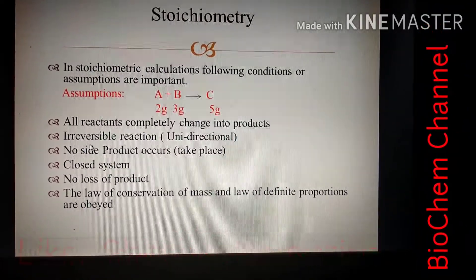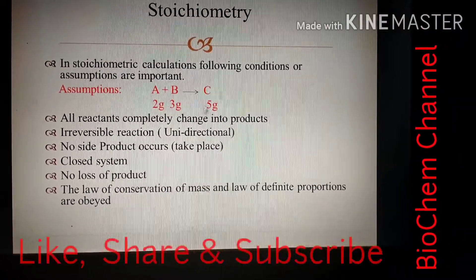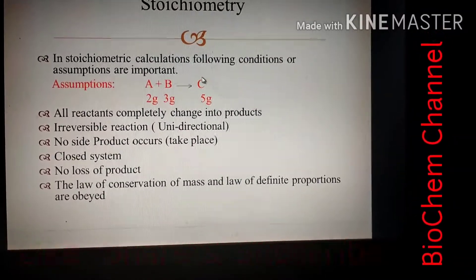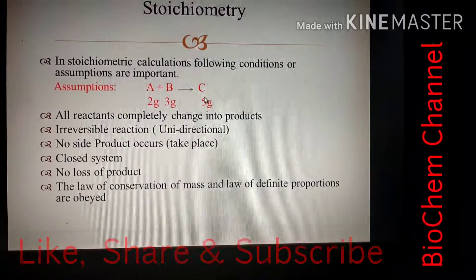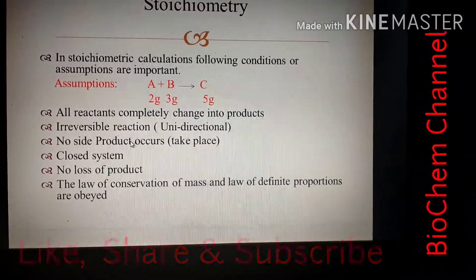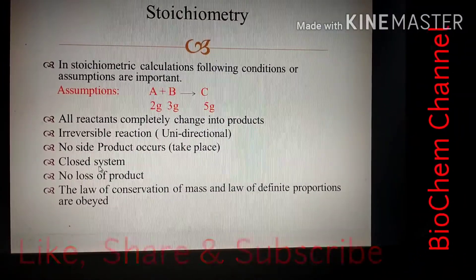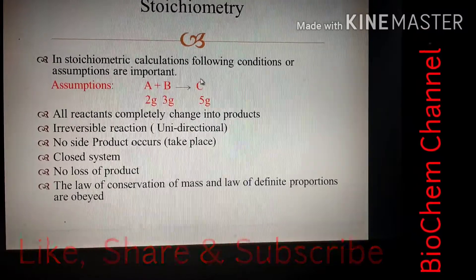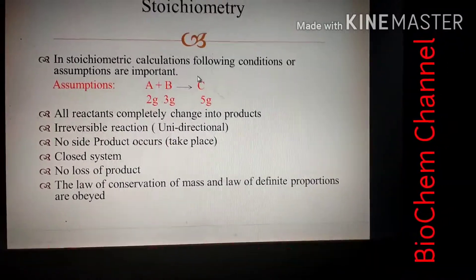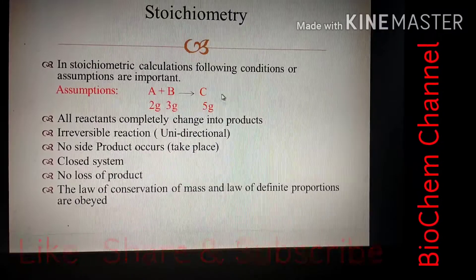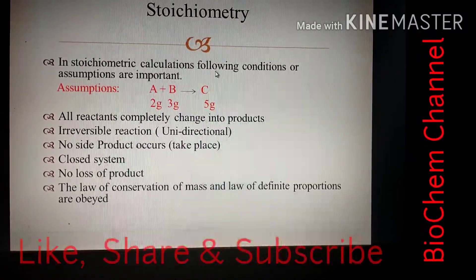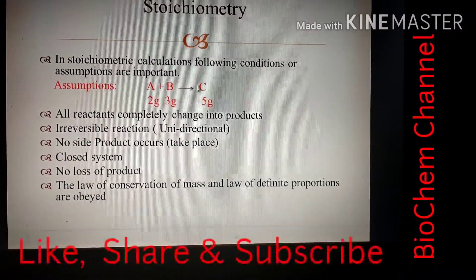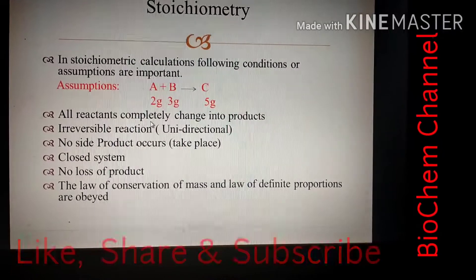The third assumption is no side product should be formed. If a side product or gas is produced and escapes, the full 5 grams of product will not remain. The fourth assumption is a closed system — the reaction should be done in a closed system so that nothing enters or leaves, keeping the 5 grams of reactant conserved as 5 grams of product.